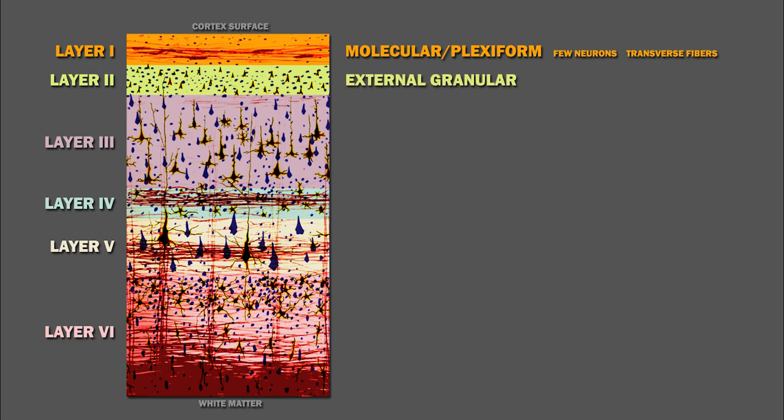Layer 2 is called the external granular layer and contains lots of stellate neurons, as well as small pyramidal neurons. Layer 3 is called the external pyramidal layer and is predominantly occupied by small and medium-sized pyramidal neurons. There are also other neurons with vertically-oriented axons.